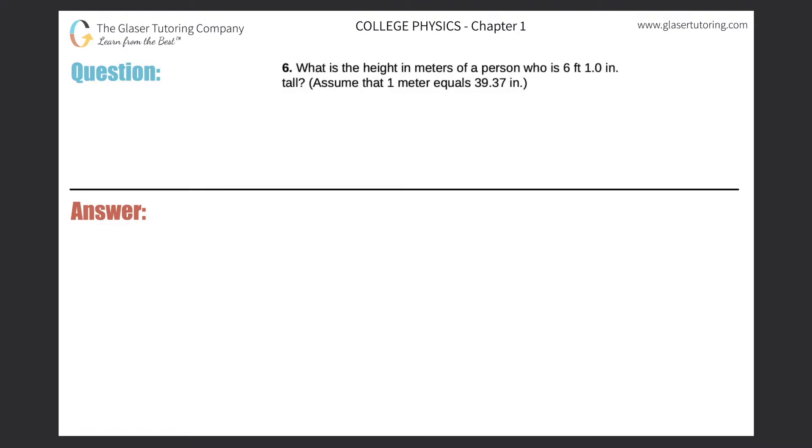Number six: What is the height in meters of a person who is 6 foot 1 inch tall? It says assume that one meter equals 39.37 inches. So they give us a conversion value for meters to inches. That means if I can find out the total amount of inches, I can simply use this conversion factor to find out the meters.